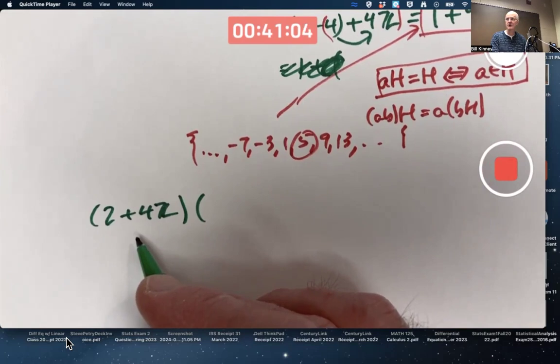Because the group operation of the factor ring is addition, always. Because rings themselves always have an addition.